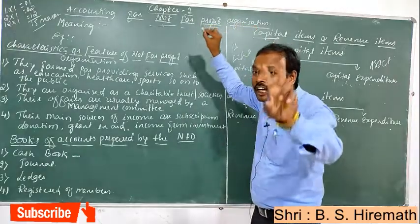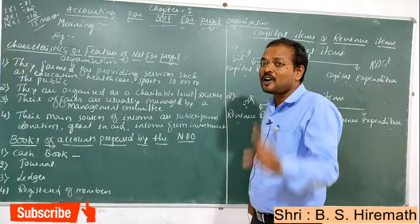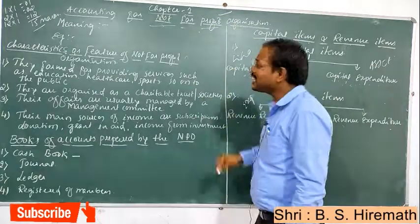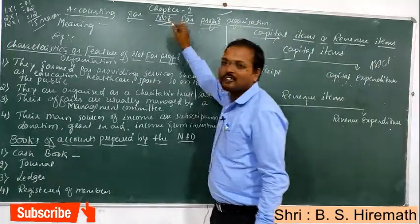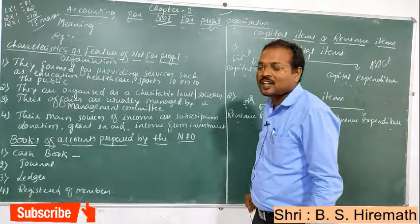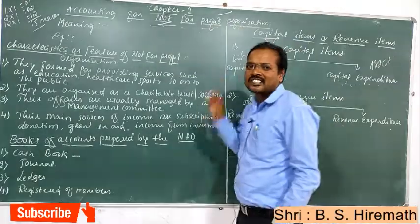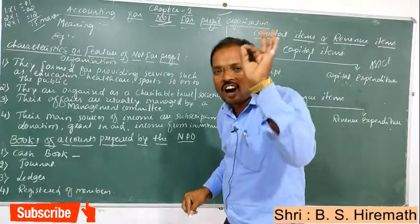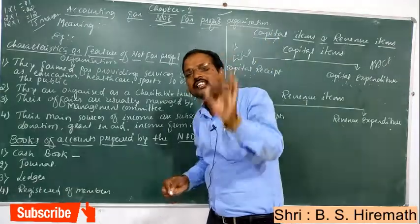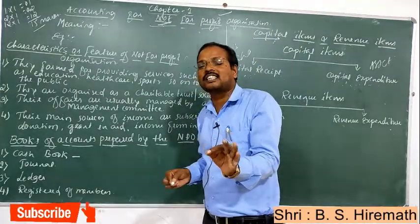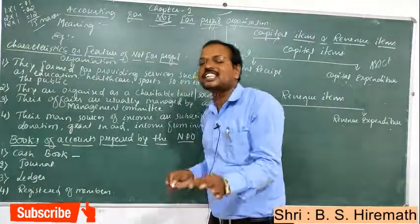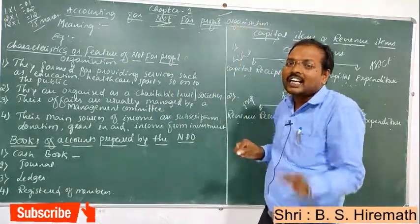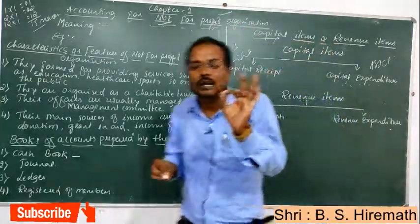So, what is not-for-profit organizations? There are mainly two types of organizations. First one is profit organizations and second one is not-for-profit organizations. Profit organizations are those which buy and sell goods and services and make profits. That is called a profit organization.